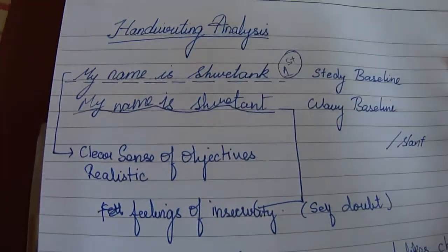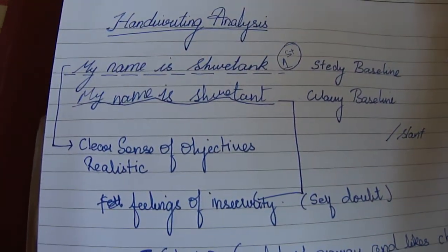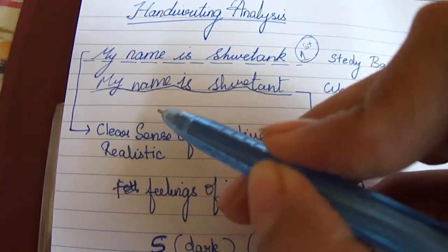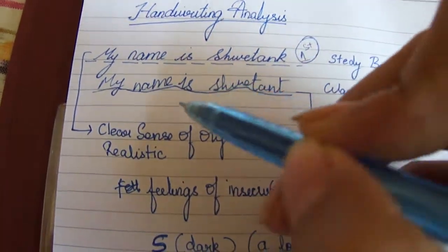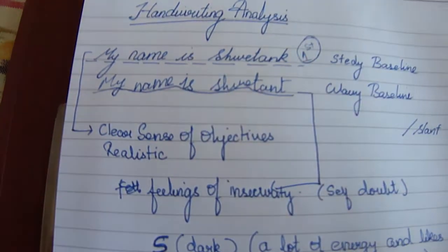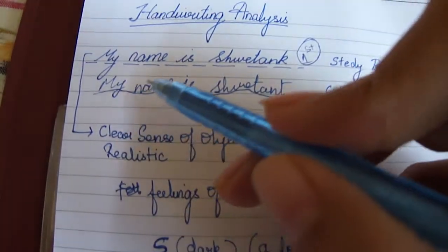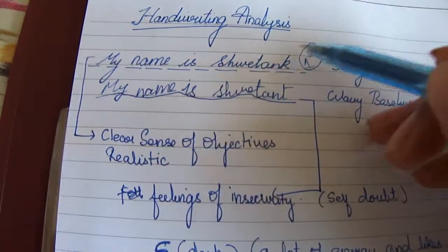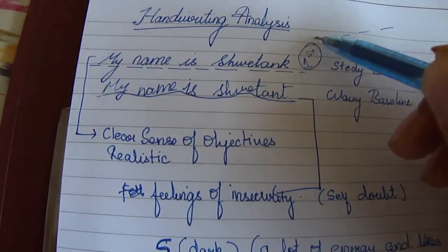This can mean more stability and cautious nature in the person. Whereas if the baseline is wavering, sometimes going up, sometimes coming down, it also means that the person is not very stable. Sometimes the person is more optimistic, sometimes pessimistic, because if your baseline starts going upwards, you start writing with a slant.